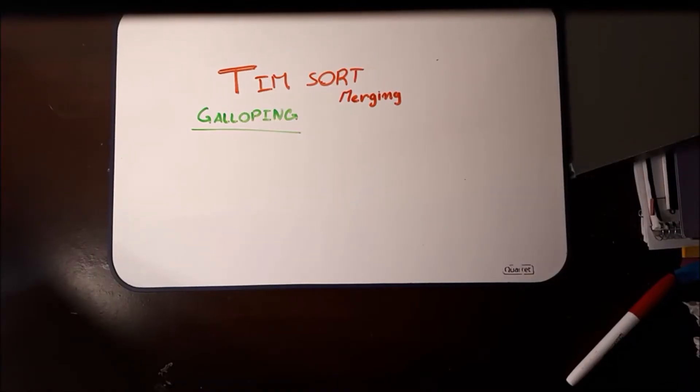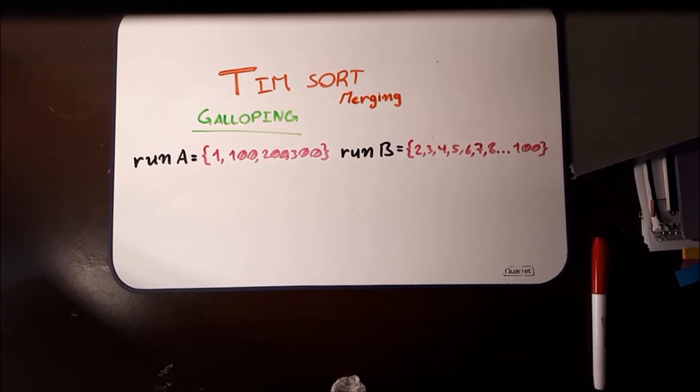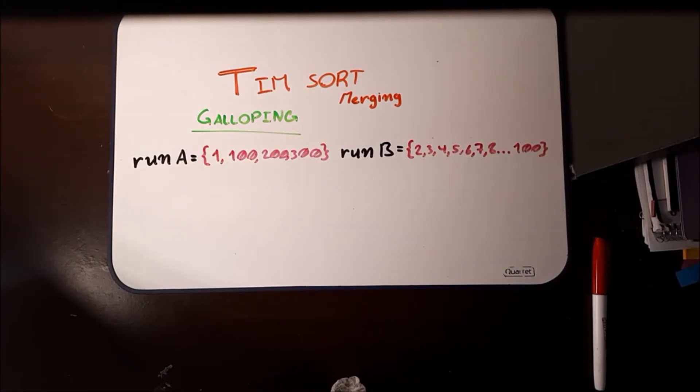Another way Timsort makes the merging process a lot more efficient is by using galloping. It's easiest to explain it using an example. So here, run A has elements 1, 100, 200, and 300. And run B has every number from 2 to 100.